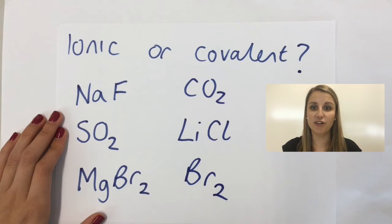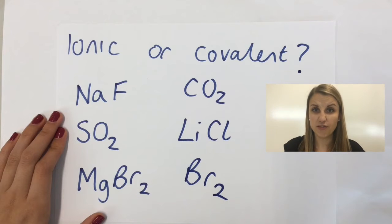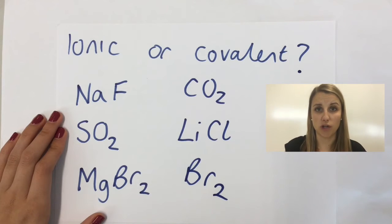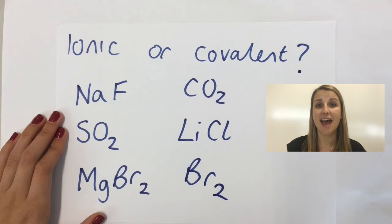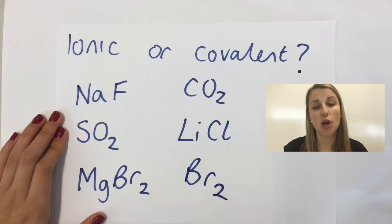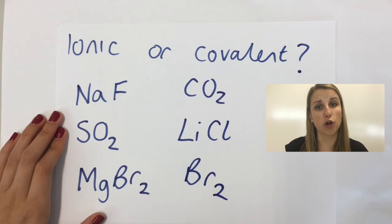Here are your answers. NaF forms an ionic bond — Na is a metal, F is a non-metal, so that forms an ionic bond. SO₂ forms a covalent bond, as both S and O are non-metals.